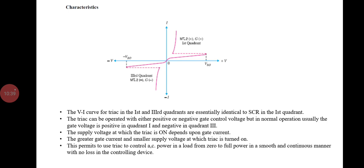Looking at the VI characteristics of the triac, the first and third quadrants are essentially identical to the SCR in the first quadrant. The triac can be operated with either positive or negative gate current control voltages. In normal operation, the gate voltage is positive in quadrant 1 and negative in quadrant 3. The supply voltage at which the triac turns on depends upon the gate current — greater gate current means a smaller supply voltage is needed to turn on the triac. This permits the triac to control AC power into a load from 0 to full power in a smooth and continuous manner with no loss in the control device.